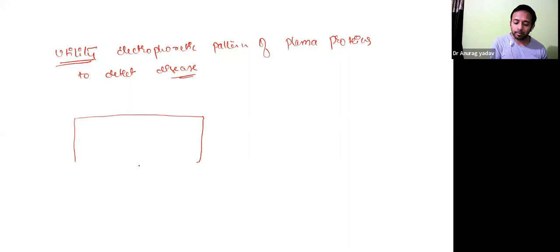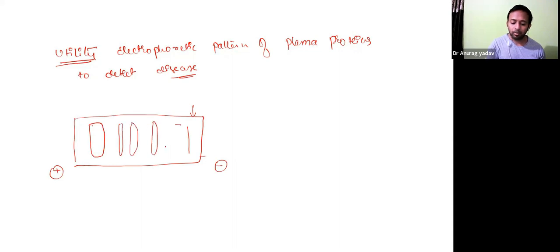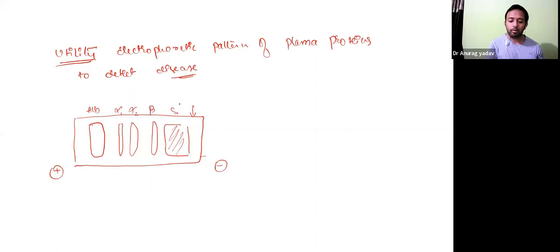In electrophoresis, you are separating the plasma on an electrophoretic sheet — it can be cellulose or agarose. With a negative and positive node, when you apply the serum sample it starts migrating and you will see particular bands: albumin, alpha-1, alpha-2, beta, and gamma. The albumin band is thick because it is at high concentration.